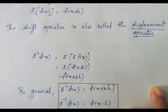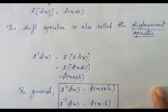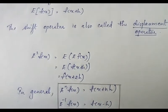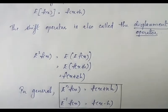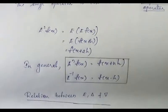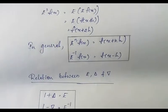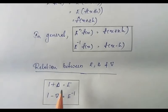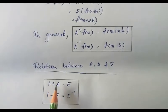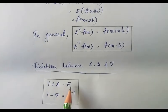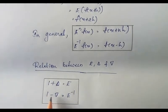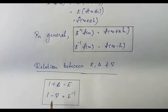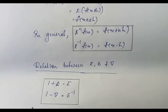We have now learned three operators: the forward difference operator, the backward difference operator, and the shift operator. The relation between these operators is: 1 plus delta equals E, and 1 minus del equals E minus E raised to minus 1. This is an important relation.